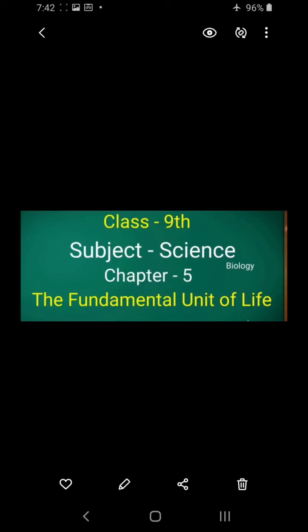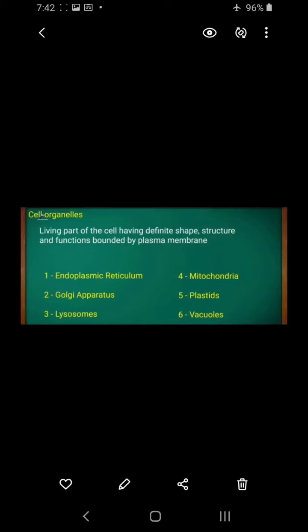Friends, today we are going to do the next topic: cell organelles. What are cell organelles? They are the living parts of the cell having definite shape, structure, and functions, bounded by a plasma membrane. There are different types of cell organelles present in the cell: endoplasmic reticulum, Golgi apparatus, lysosomes, mitochondria, plastids, and vacuole. We will now discuss these cell organelles one by one.